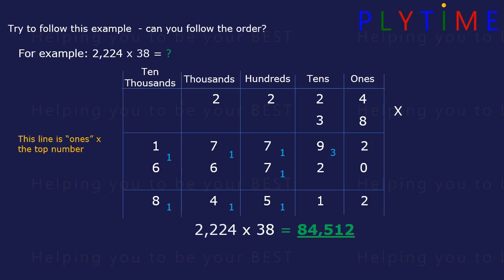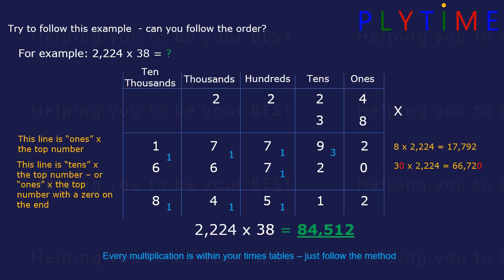The top line is the ones times the top number, or 8 multiplied by the number. And the second line is the tens times the top number, or ones times the top with a 0 on the end. So it's 30 times 2,224. Every multiplication is within your times tables. Just follow the method.